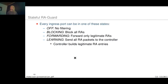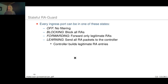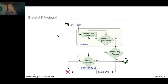The stateful RA-GUARD reduces administration overhead by automatically configuring the system. In this mode, every ingress port can be in one of the following states: the off state, where no filtering happens at all; the blocking state, where every received router advertisement packet is blocked; the forwarding state, which forwards only legitimate router advertisement packets — working the same as stateless RA-GUARD; and the learning state, in which every RA packet is sent to the controller. The controller extracts the relevant information and builds the legitimate RA entries for the forwarding state. The controller is also responsible for state transitions.